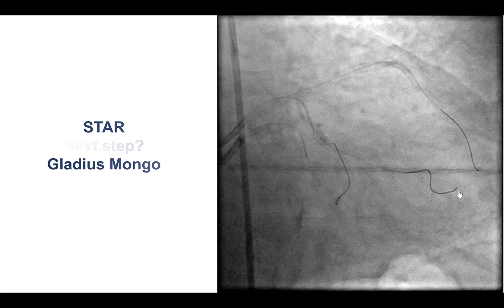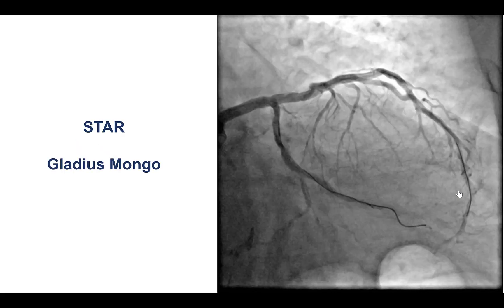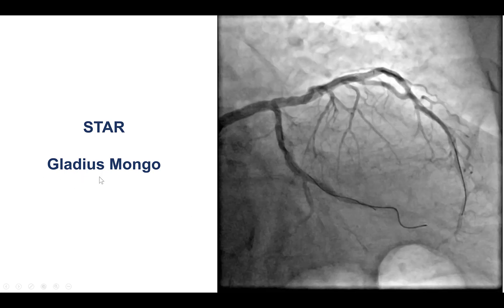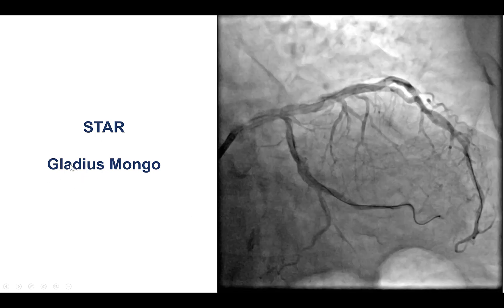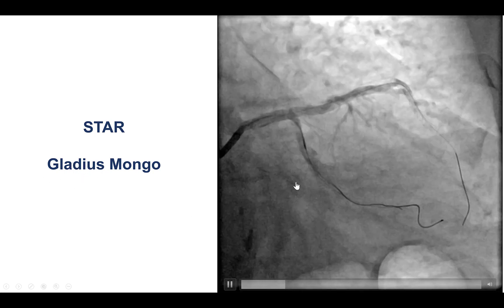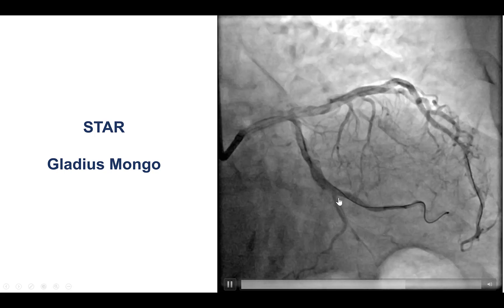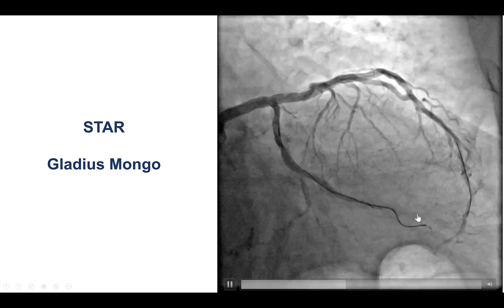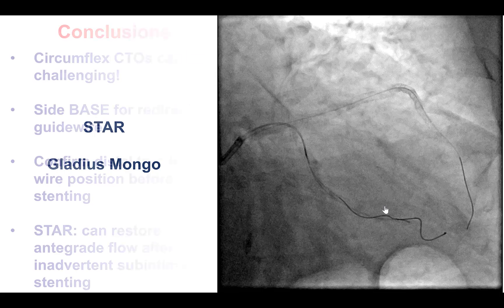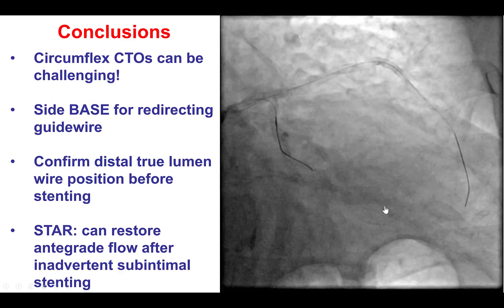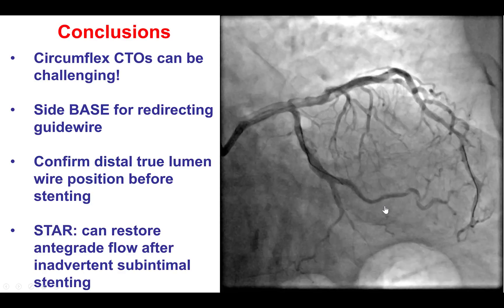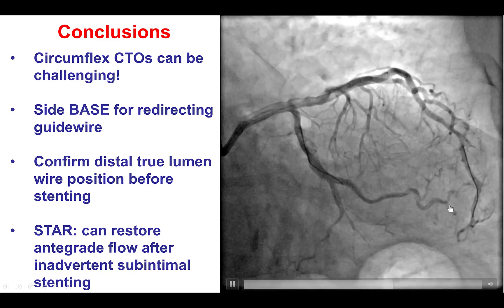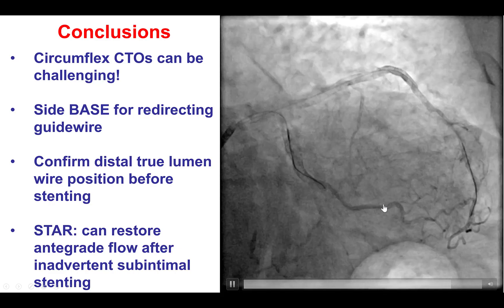At this point, we decided to use the STAR technique. We used a polymer-jacketed stiff wire, the Gladius Mongo, and after multiple passes, we were actually able to restore anterograde flow into the superior branch of the obtuse marginal and obtain a satisfactory final result, although there are still evident dissections within the course of the vessel.